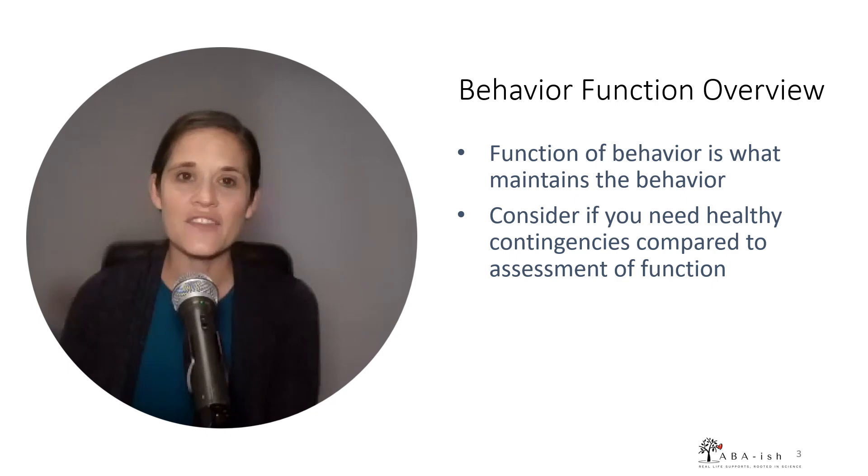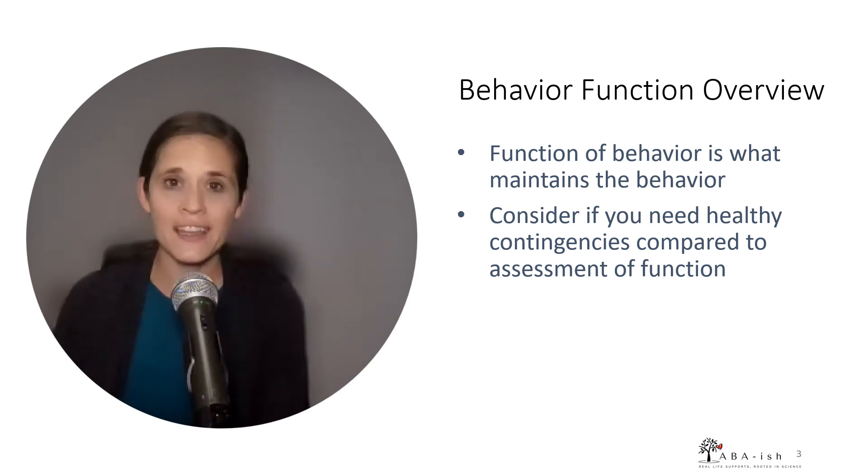One question I get asked a lot is if I want to intervene to decrease a problematic behavior, do I always need to know the function of the behavior? And the honest answer is that we don't always need to know the function. There are times that we can try what is often called healthy contingencies to first see if those are sufficient to reduce a behavior of concern. By healthy contingencies, I mean giving as many preferred consequences as possible for appropriate behavior and as few preferred consequences as possible for inappropriate behavior. I talk about this a lot if you listen to any of my caregiver videos on this channel. I encourage them to give high energy to behaviors that we want to see more of and low energy for behaviors we want to see less of. Because in a lot of situations, that is actually sufficient to reduce problematic behavior.